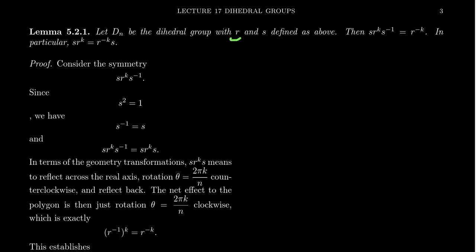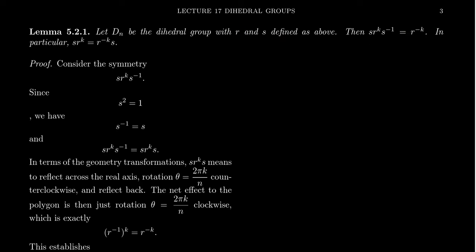Remember, R corresponds to a counterclockwise rotation, so its inverse represents a clockwise rotation. The equation we actually want is S R^k = R^(−k) S, which we get by multiplying both sides of S R^k S⁻¹ = R^(−k) by S on the right.